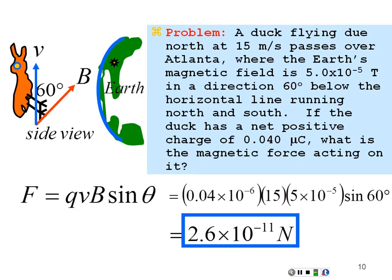Some scientists have suggested this is how birds know they're flying north — they feel this small lateral force. However, the force is too small, and it's more likely that birds navigate by reacting to the position of the sun, which appears more southward in the northern hemisphere.